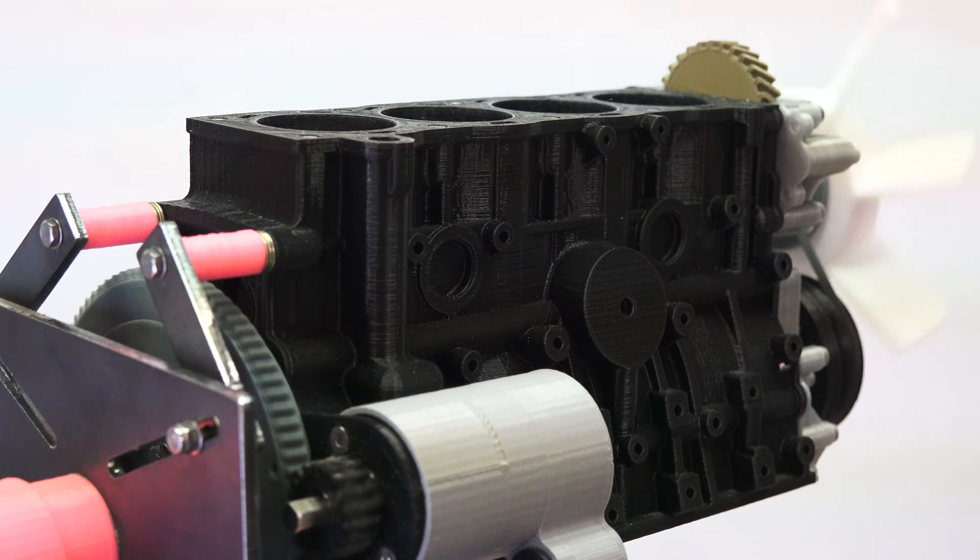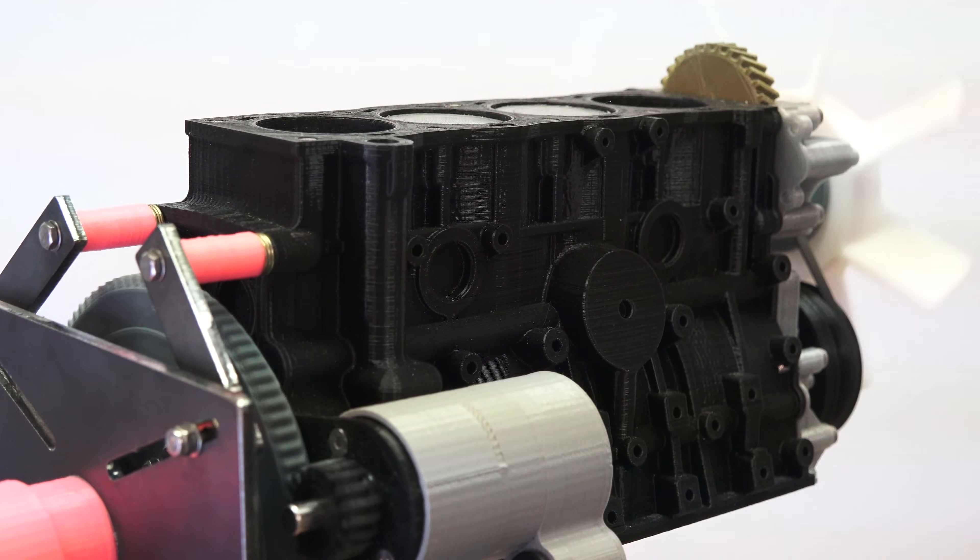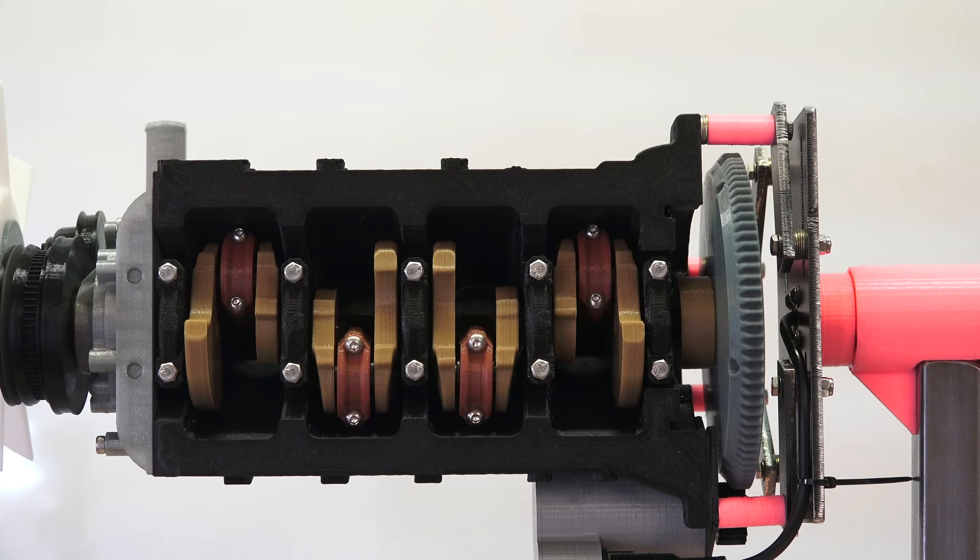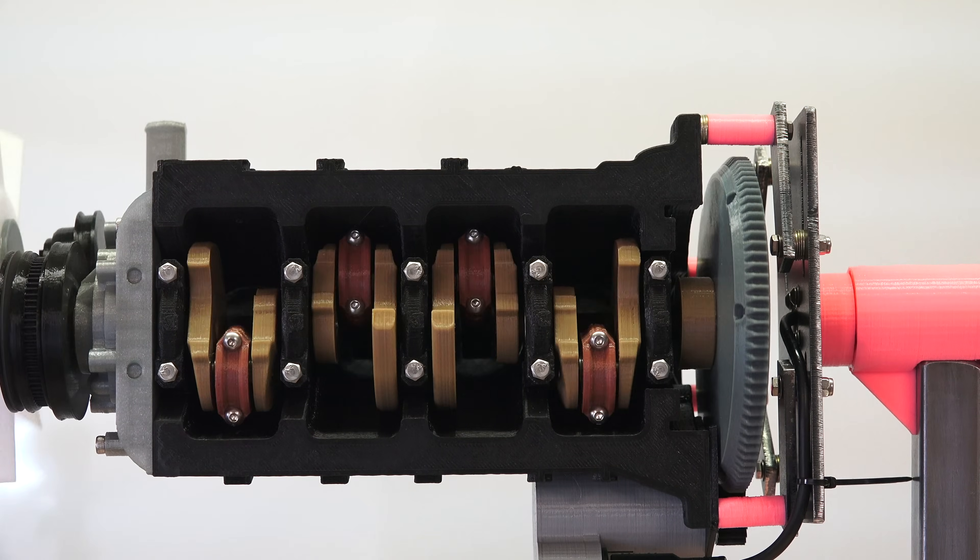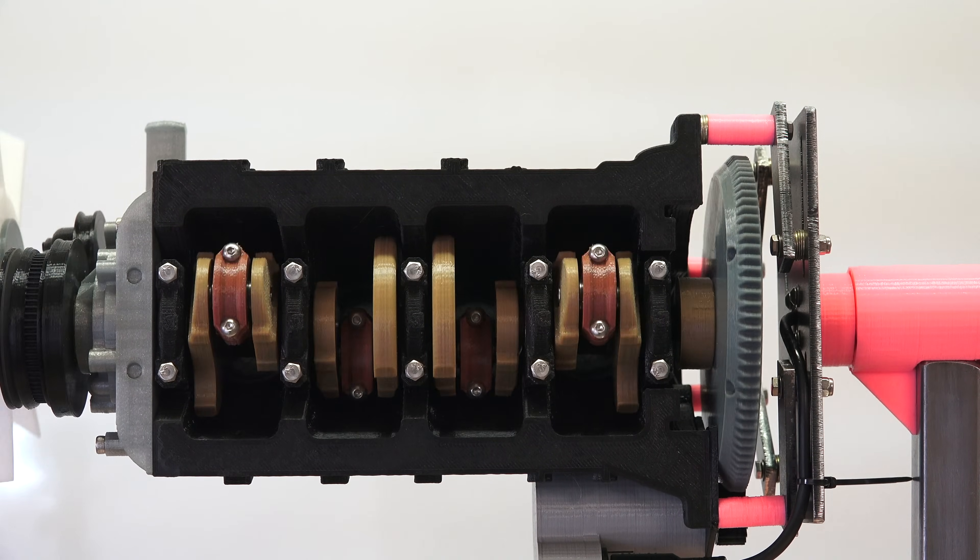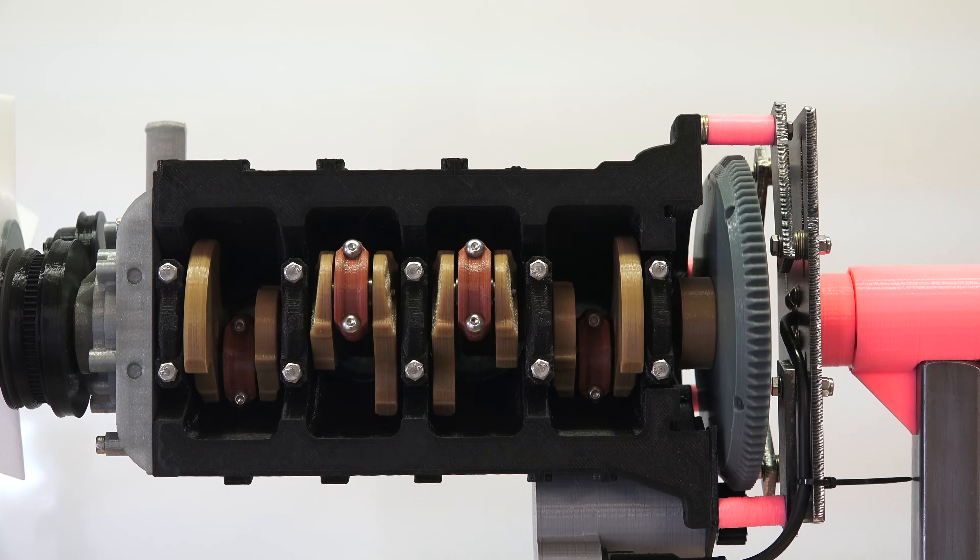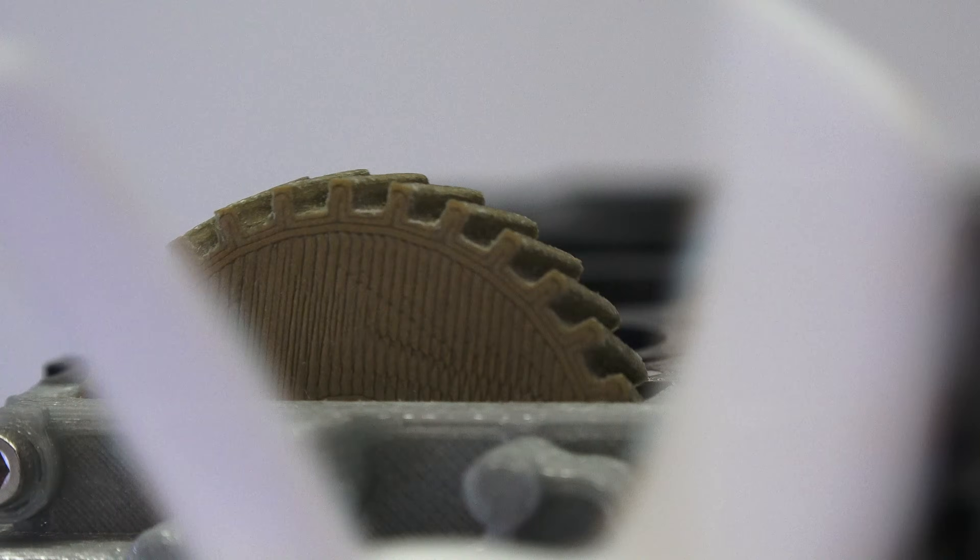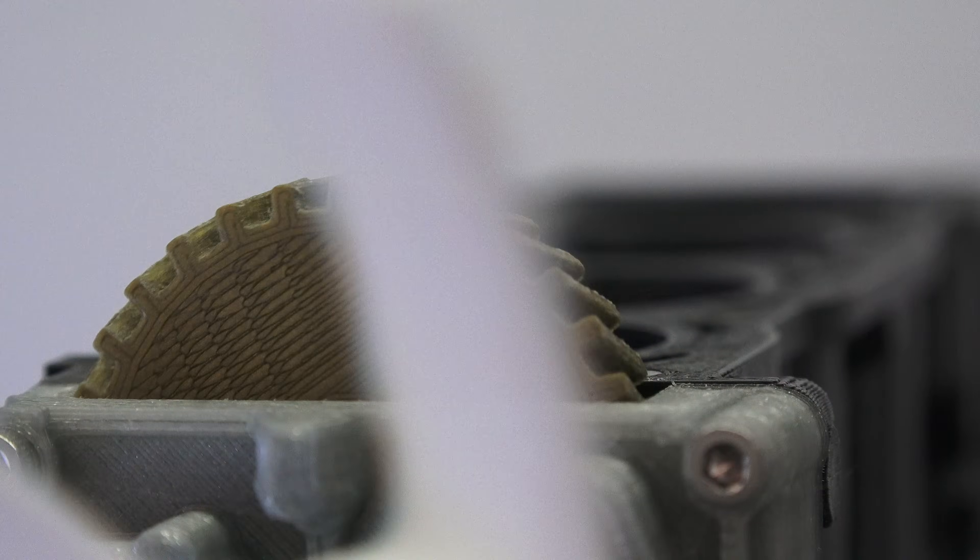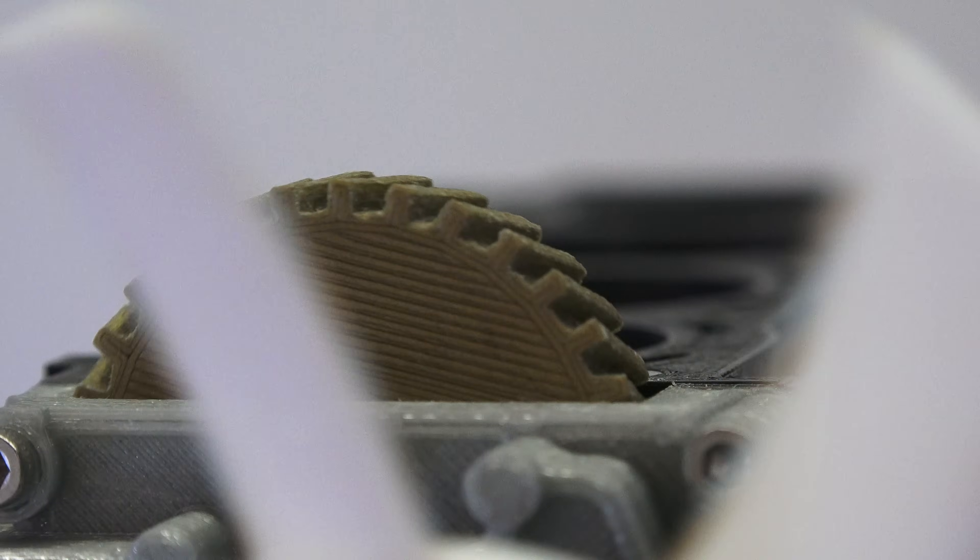Now you do have a higher center of gravity as a result of this style of engine just because you've got your cylinders stacked in a line but they're vertical rather than horizontal or in a V. And you also do have a secondary imbalance with these inline four cylinder engines as a result of the secondary forces of those pistons moving up and down.